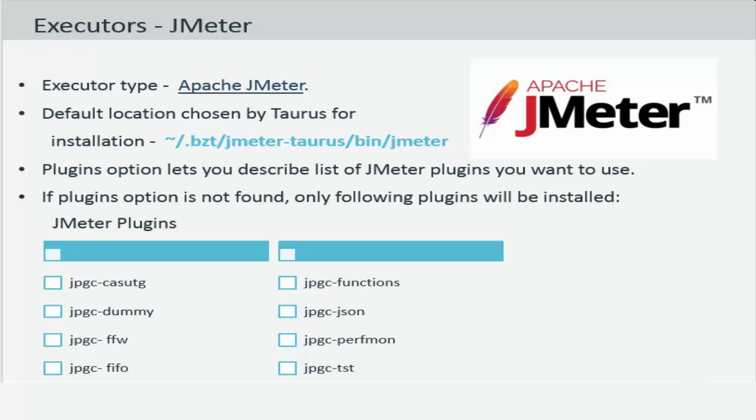The plugin options lets you describe the list of JMeter plugins you would want to use. If the plugins option isn't found, only the following plugins will be installed. The list is given to you on the screen.